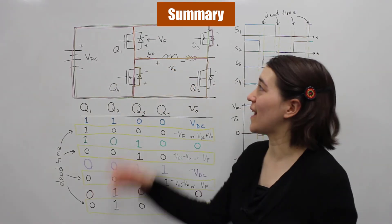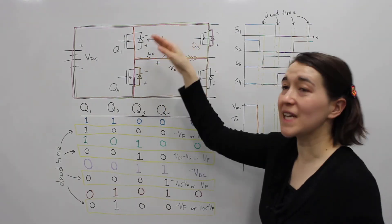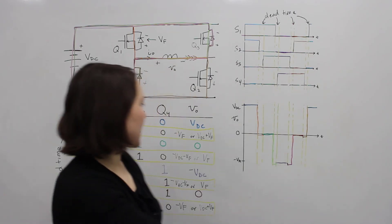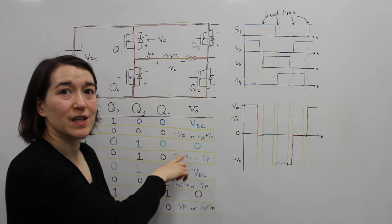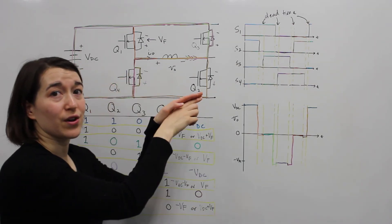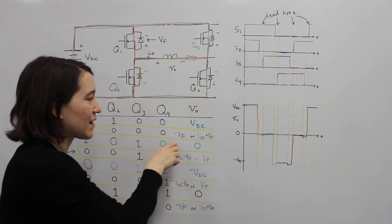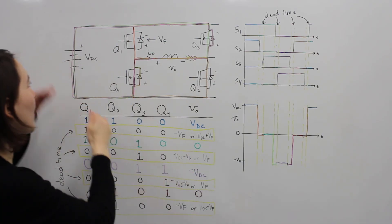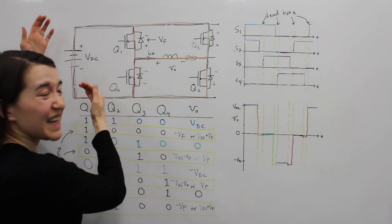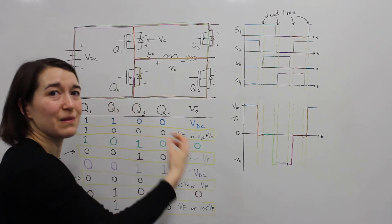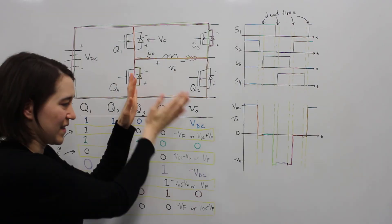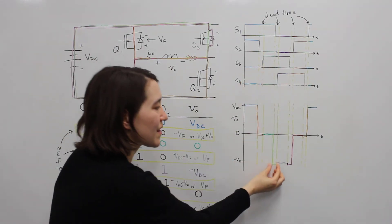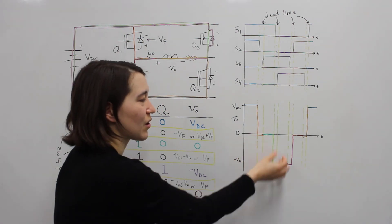When we use real switches in a full bridge inverter we need to add a little bit of dead time between the switches of each leg. During the dead time there will be a slightly different voltage over the load, and that voltage depends on the direction of the current. There will be a small effect from the forward voltage of the body diode, but generally VDC is quite high and VF is relatively much smaller, so it can often be completely ignored. Note that the actual dead time is going to be much smaller than shown here — we just showed it larger so you can get the concept.